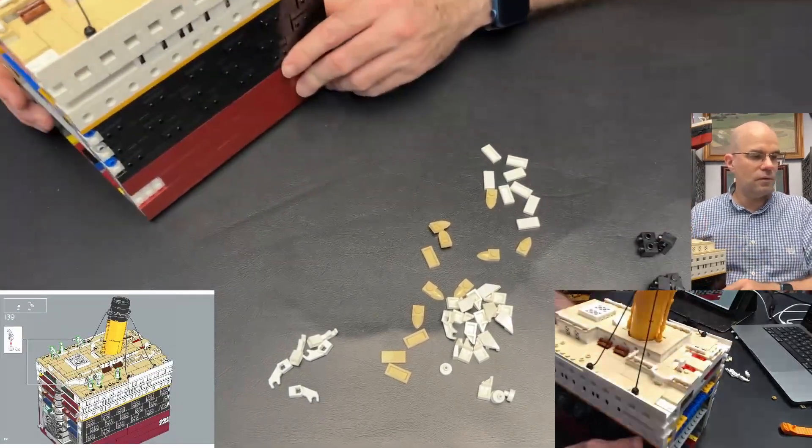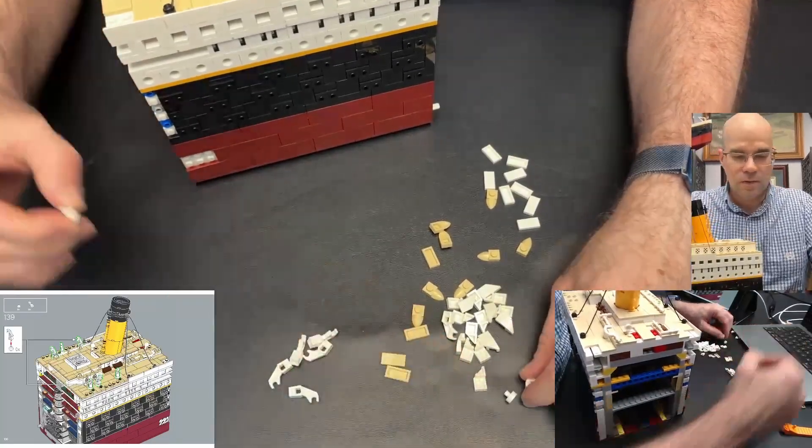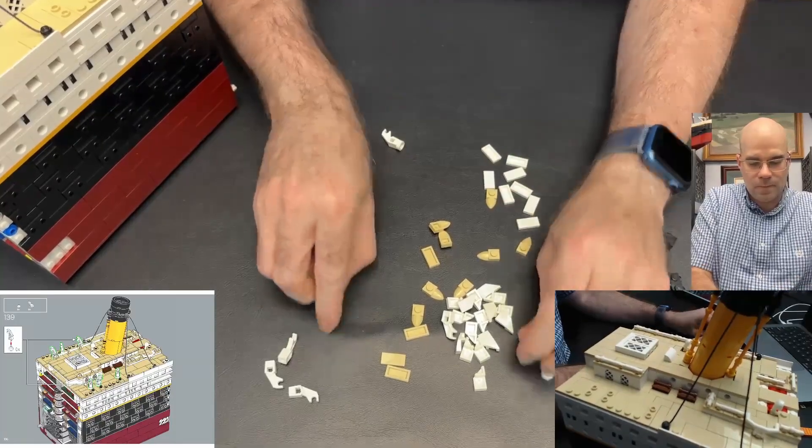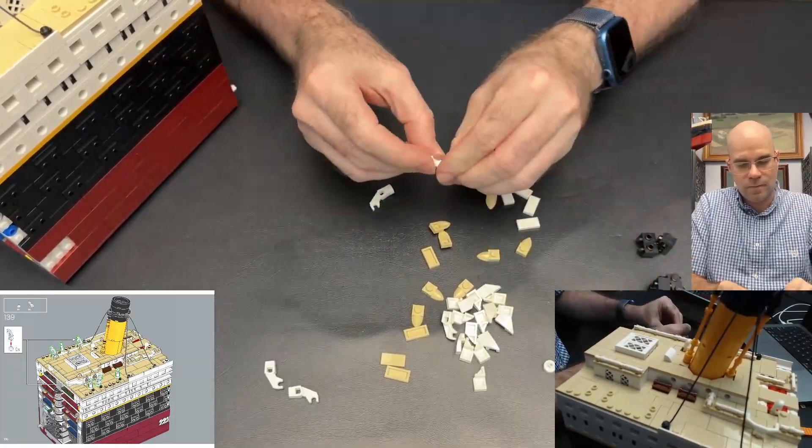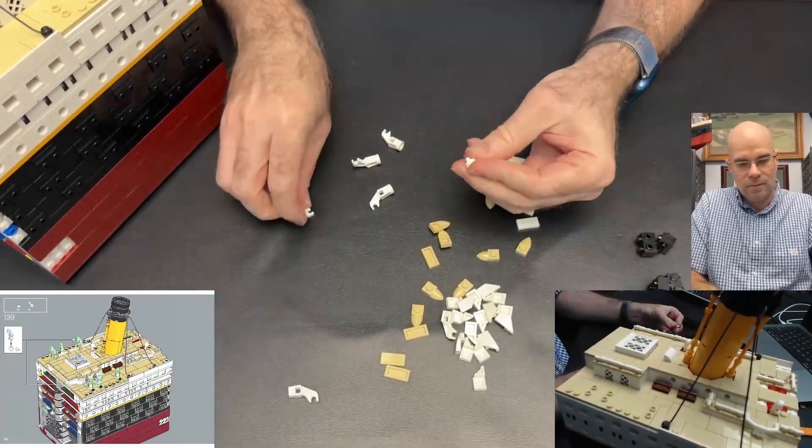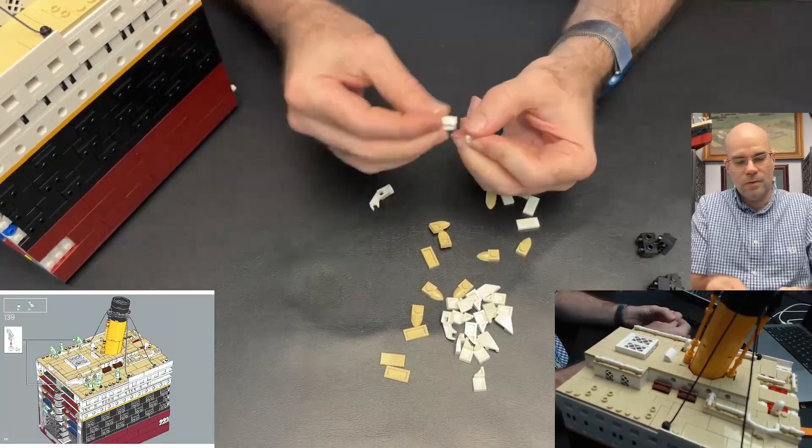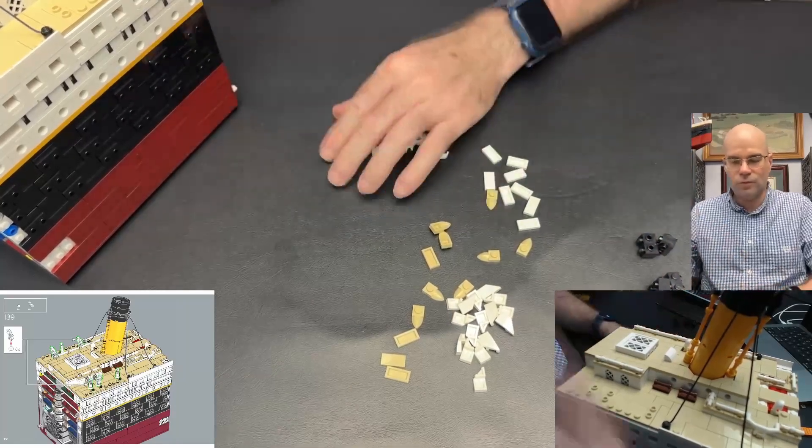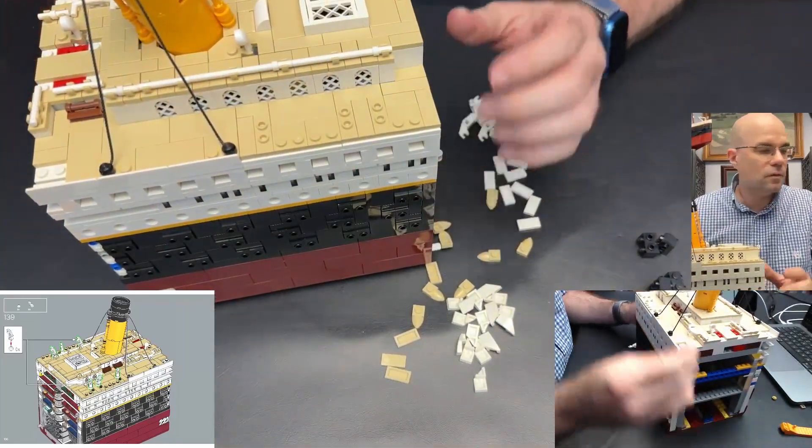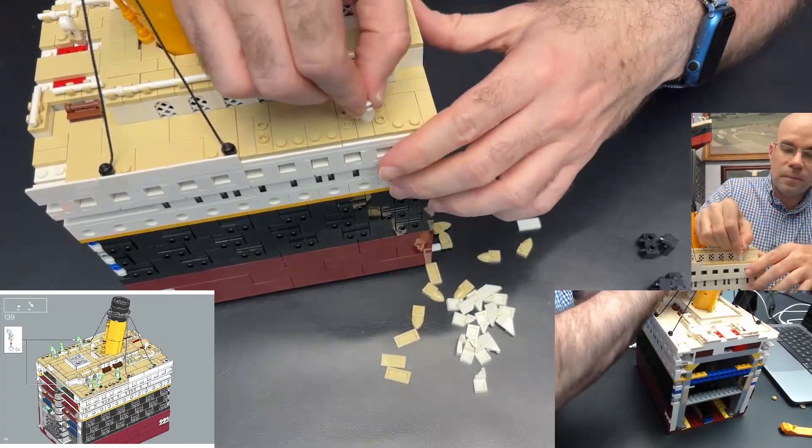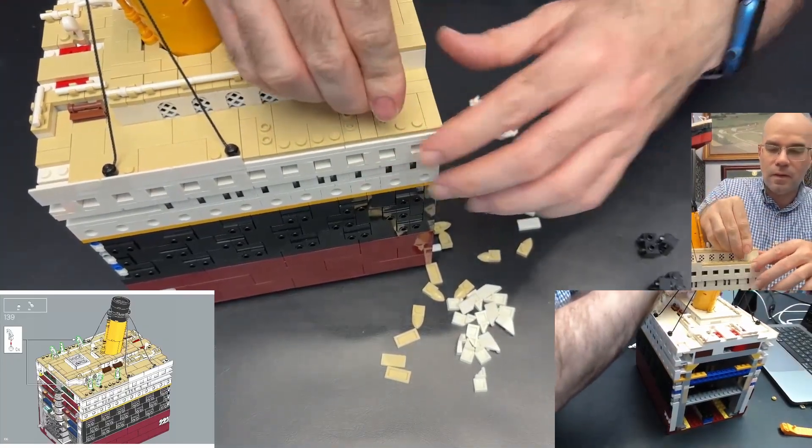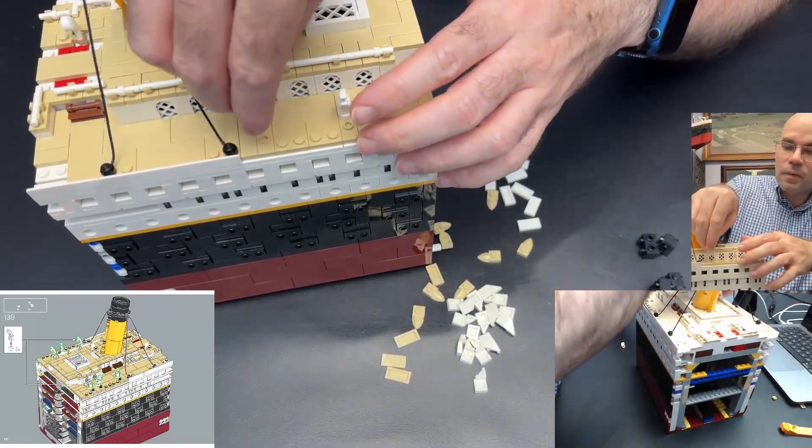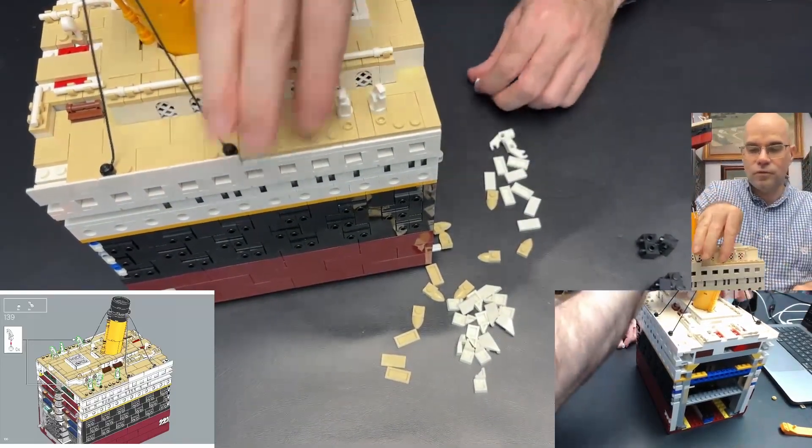Okay, we have the boat holders, the lifeboat holders. Where do they go? They go on the studs, or the jumpers, because the boats are going to go in between.